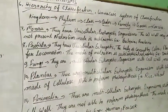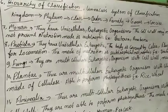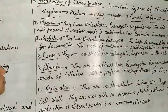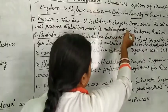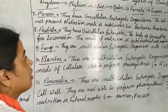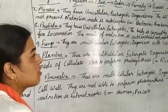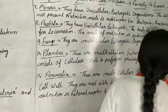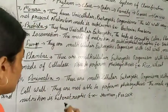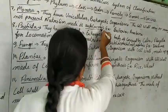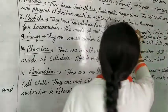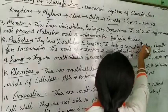Let's see about Monera. They have unicellular prokaryotic organisms, meaning no true nucleus is present. The cell wall may or may not be present. Their nutrition mode can be autotrophic — they can take food through their cells. Examples include bacteria and Anabaena.